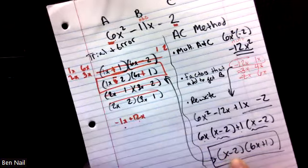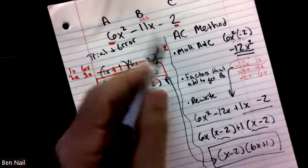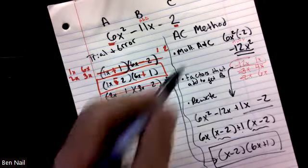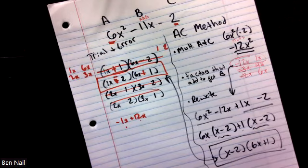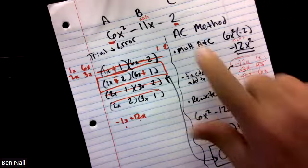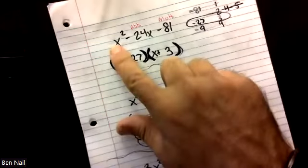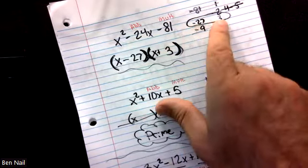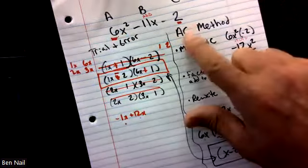Same answer — two different methods. One requires understanding factors and guessing; the other is a straightforward step-by-step process. Most people prefer the AC method. Use the AC method when there's a number in front of x squared. When there's no number in front, the shortcut is way faster — just look for two numbers that multiply and add. When there is a number in front, things get more complicated and we use the AC method.